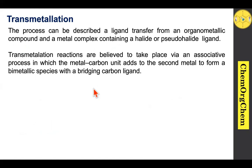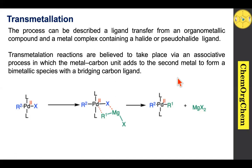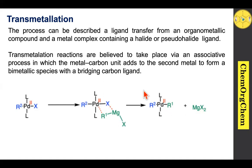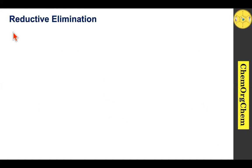Transmetalation is essentially a ligand transfer from an organometallic compound to a metal complex containing a halide or pseudo-halide ligand. Transmetalation is believed to take place via an associative process. The intermediate species reacts with the Grignard reagent: a bimetallic species forms with both palladium and magnesium. Palladium interacts with the carbon while magnesium interacts with the palladium unit, resulting in the R1 ligand attaching to palladium and X transferring to magnesium.